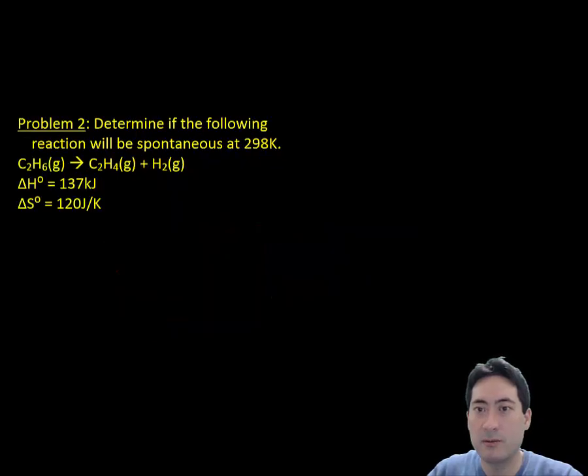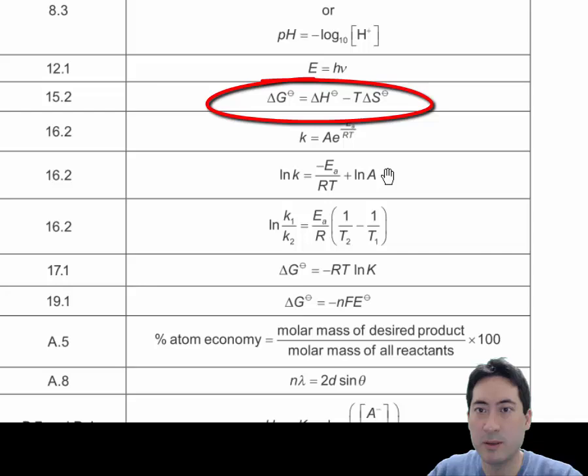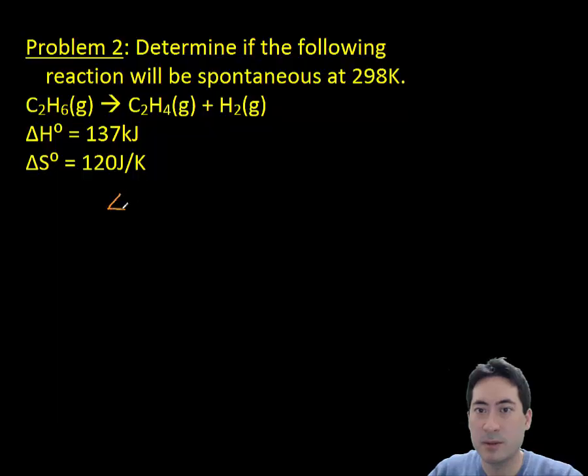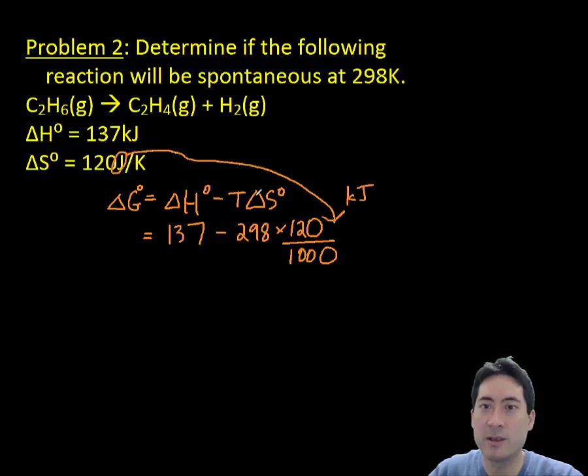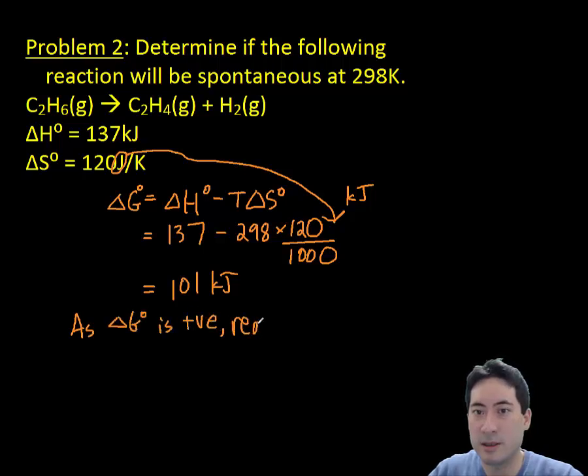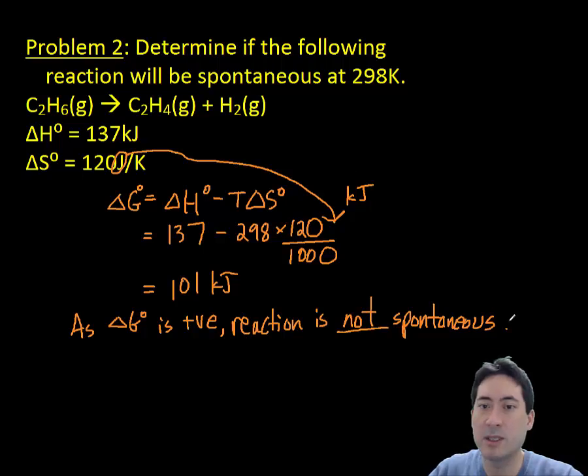Problem two, the formula you can get from your data booklet here. So formula written out. This one's fairly easy because the delta H and delta S is given to you, but as you know from this unit, you could be asked to work those out from experimental values or other information, so substitute those in. You get a positive delta G, so make sure you write clearly if it's spontaneous or not spontaneous in your answer.